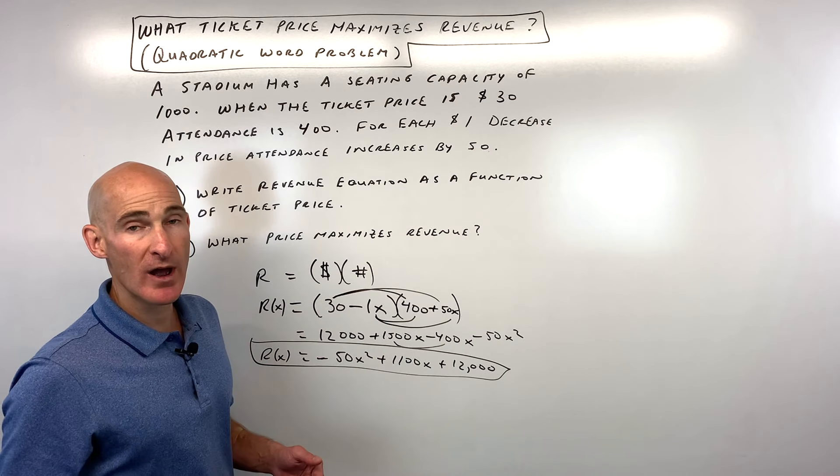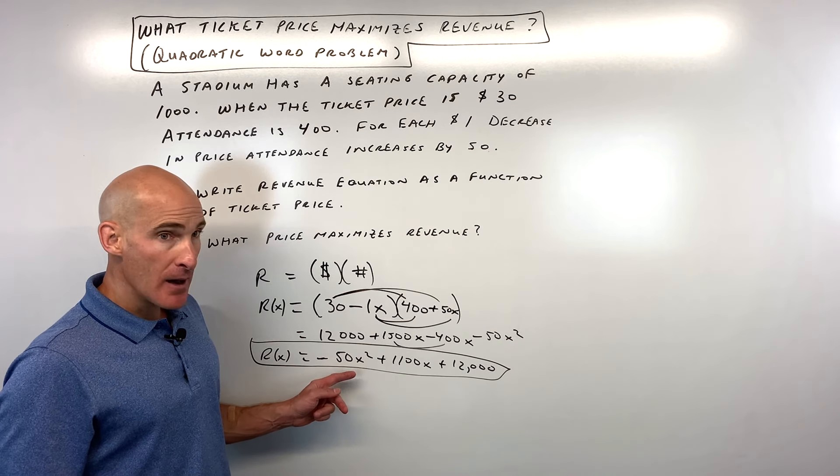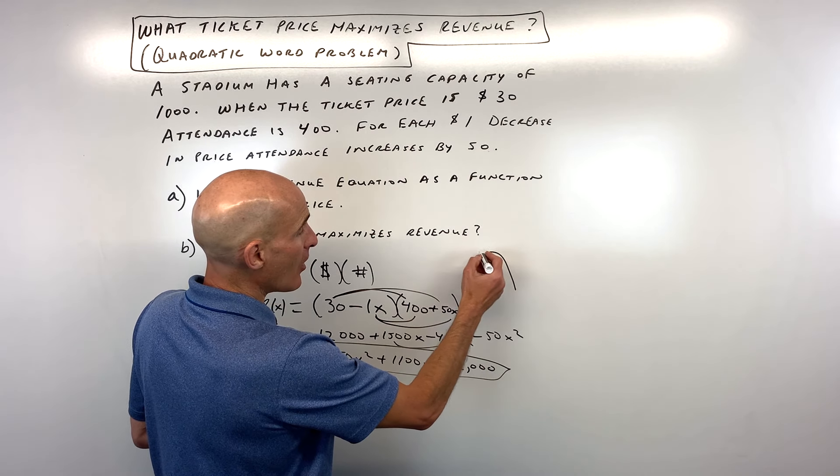Now part b, what price maximizes the revenue? Well one thing I want to point out this is a quadratic. See x squared. But notice the a value is negative. So what does that tell us? The parabola is opening down.